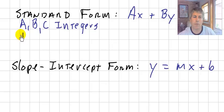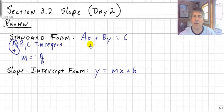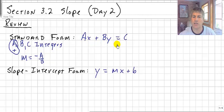And A must be positive. So we don't care about B and C. They can be negative. But A has got to be positive. So A is positive and B and C are integers. Slope, in standard form, is the opposite of A over B. And we did that the other day by rewriting the equation and solving for y. And when we did that, we got y equals the opposite of A over B, x, plus C over B.